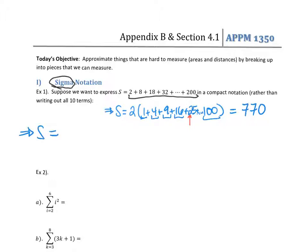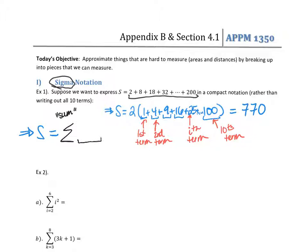The first thing we're going to do is label the terms: the first term, the second term, and so on with a general variable — we typically use i, sometimes n or k — to allow us to show a general formula. Now I want to write this in sigma notation. I write the sigma symbol, which tells me to sum up things, and what goes inside tells me what each term should be.